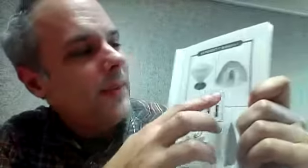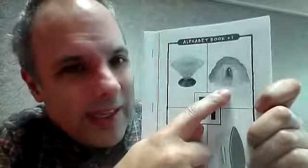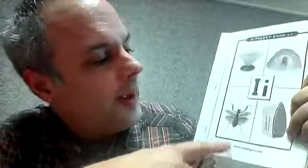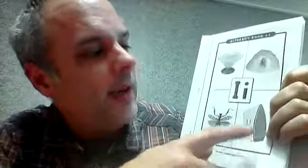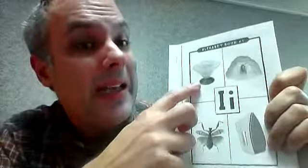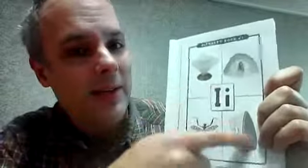So the I has an I sound, but sometimes also an I sound. So here it has the I sound, igloo. Insect. But for these two, ice cream, iron, it has an I and an I sound.